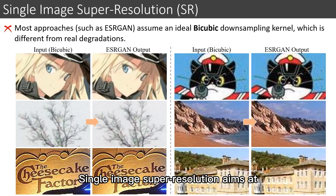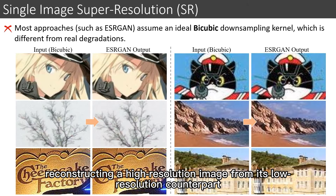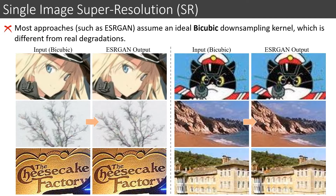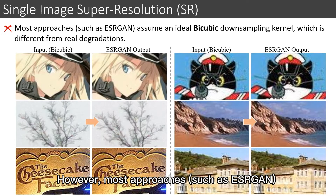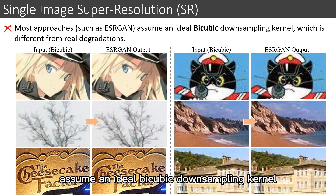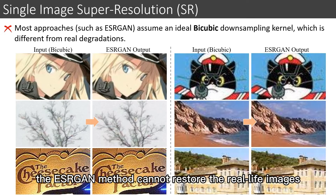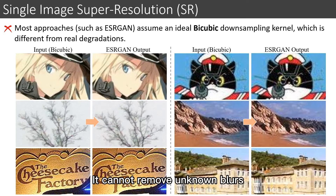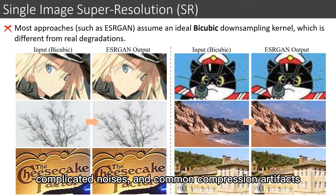Single-image super-resolution aims at reconstructing a high-resolution image from its low-resolution counterpart. However, most approaches, such as ESRGAN, assume an ideal bicubic downsampling kernel, which is different from real degradations. For example, the ESRGAN method cannot restore real-life images — it cannot remove unknown blurs, complicated noises, and common compression artifacts.